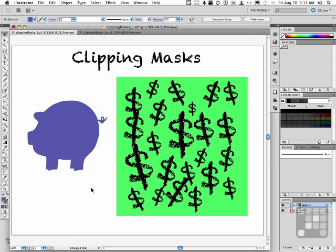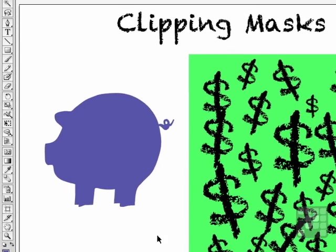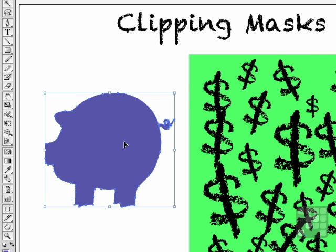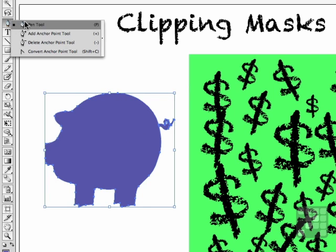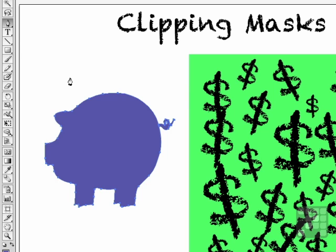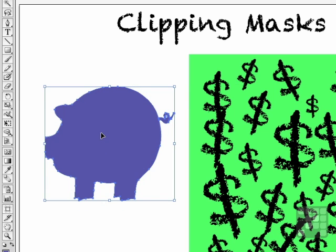Let's talk about masks, and specifically I'm talking about a clipping mask. One thing to remember about clipping masks is that the item you're using as the clip must be a vector. Over here I have my little piggy that I drew with my piggy pen tool — it is a vector shape, and that's exactly what we want.